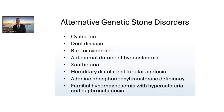There are also alternative genetic stone disorders that can be tested via genetic panels. These include cystinuria, Dent disease, Bartter syndrome, autosomal dominant hypocalcemia, xanthinuria, hereditary forms of distal RTA, adenine phosphoribosyltransferase deficiency, and familial hypomagnesemia with hypercalciuria and nephrocalcinosis.